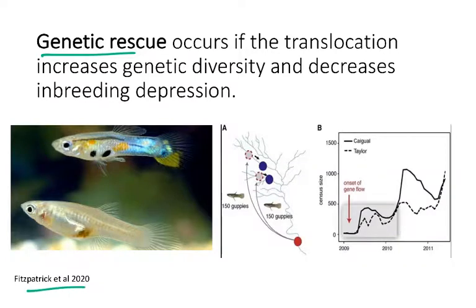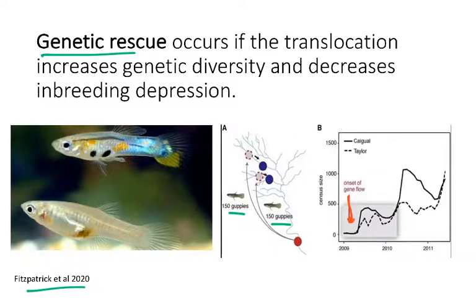This example is from a paper that came out very recently, looking at different populations of fish — different guppies in different river systems — and they manipulated gene flow by moving some individuals, translocating them from one location to the other. You can see in this graph on the far right, with this red arrow, is where they initiated gene flow, or essentially where they moved individuals.